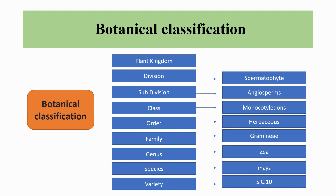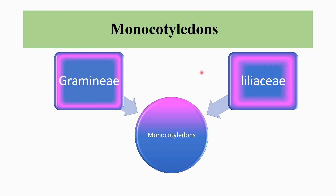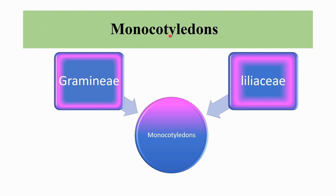According to botanical classification, we can summarize the families into two types: Monocotyledons and Dicotyledons. Under Monocotyledons, the first family is Graminae, which includes wheat, barley, rice, maize, oats, sugarcane, sorghum, ryegrass, and Sudan grass. The Liliaceae family includes onion and garlic.